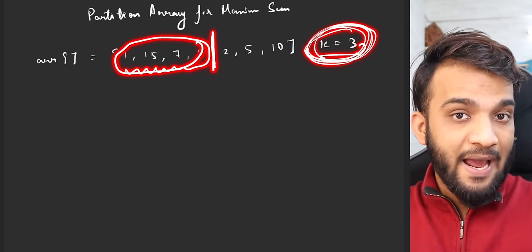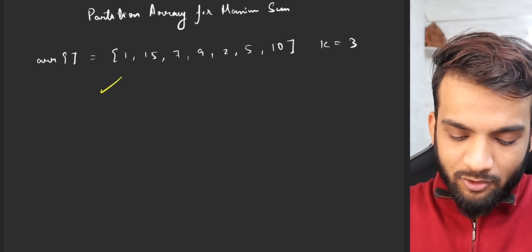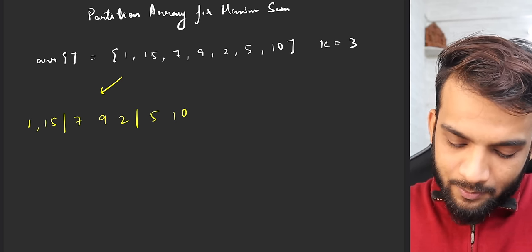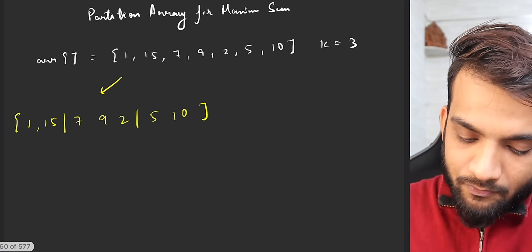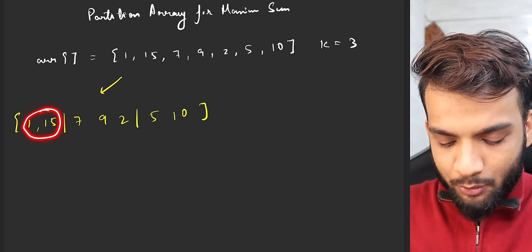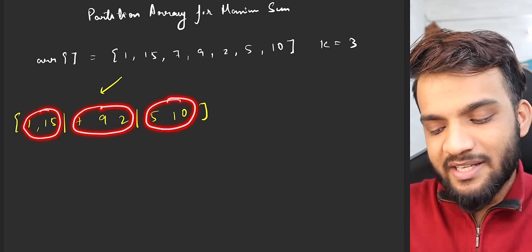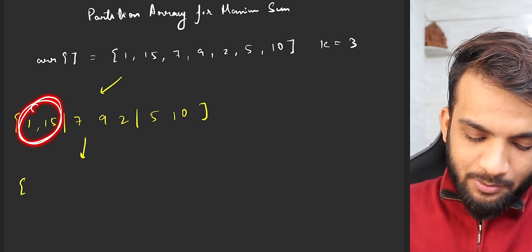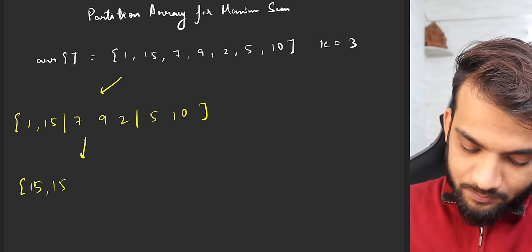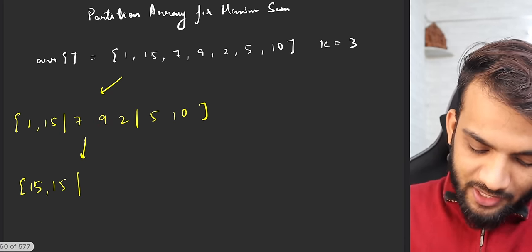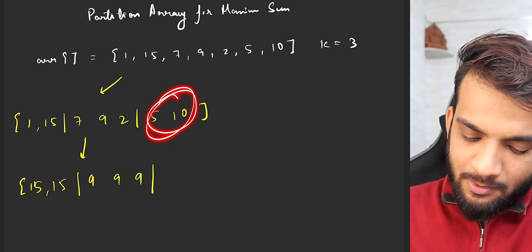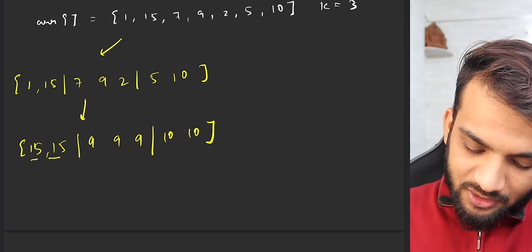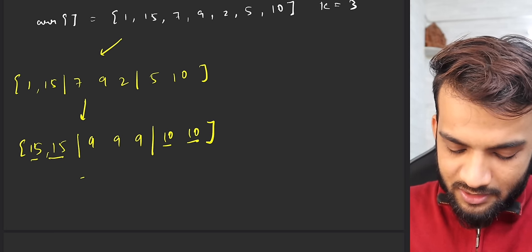At most k elements per partition are allowed. For example, if I partition [1, 15] then [7, 9, 2] then [5, 10], these have lengths 2, 3, and 2 — all allowed. Once you do a partition, the entire sub-array changes to its maximum value. So [1, 15] becomes [15, 15], [7, 9, 2] becomes [9, 9, 9], and [5, 10] becomes [10, 10]. The summation is 30 + 27 + 20 = 77.